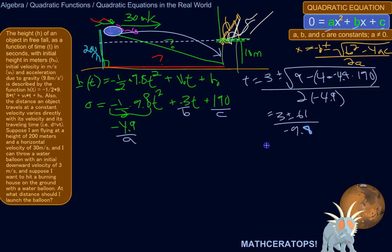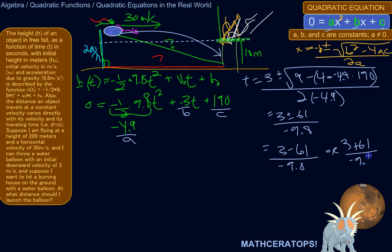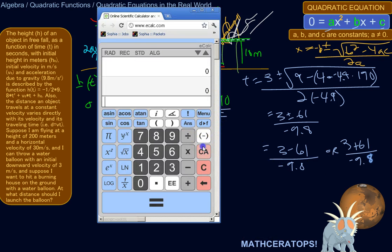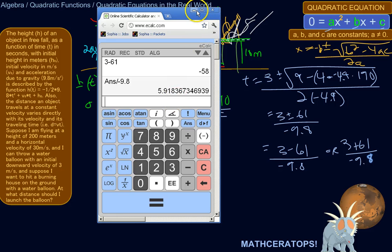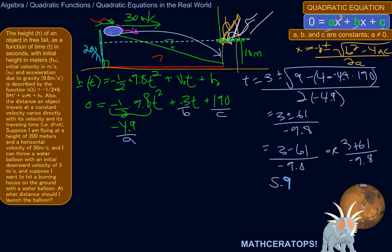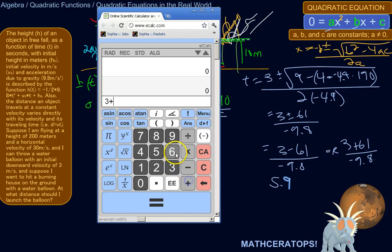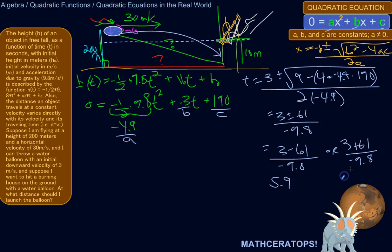Computing: the discriminant works out to about 3,733, and the square root of that is about 61. So t is either (3 minus 61) over negative 9.8, or (3 plus 61) over negative 9.8. That gives t ≈ 5.9 seconds, or a negative value. Since negative time doesn't make sense in this context, we discard it.